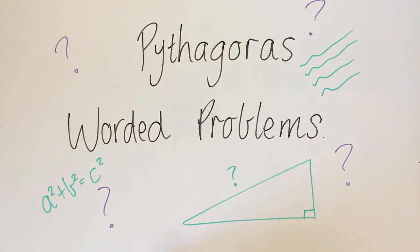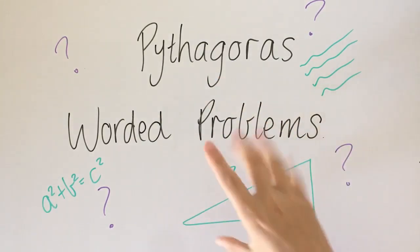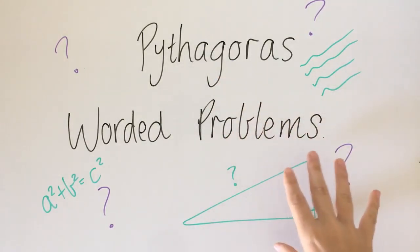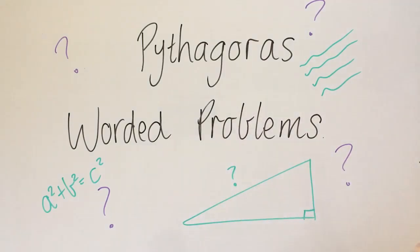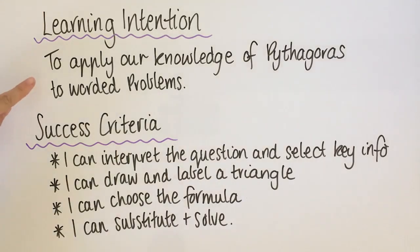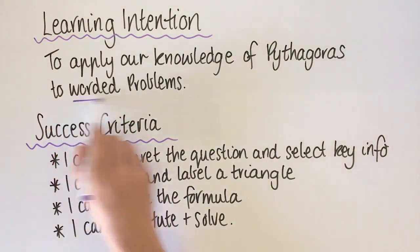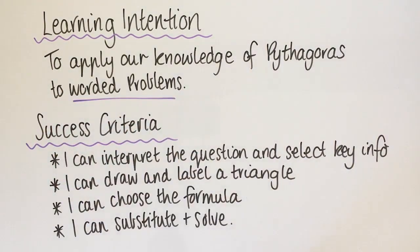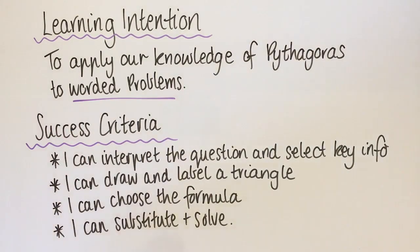In today's lesson we're going to be looking at worded problems. So far we've only really been doing problems where you're given a picture and you have to visually work it out, but today we're going to be looking at words instead. We're going to be applying our knowledge of Pythagoras to worded problems, so there's going to be a little bit of writing and reading in this one.